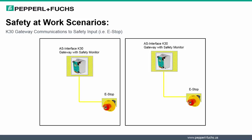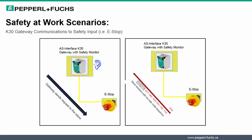Let's proceed to discuss a typical arrangement of a K30 gateway communicating to a safety input. In this scenario, first the gateway sends a request to the safety input or slave. The safety controller, in this case the K30 gateway, listens for a response back from the safety input. The safety input responds with four bits of data, like any other I/O module. But with the safety input, the four bits transmitted from the module to the AS Interface gateway follow specific rules that allow the safety monitor to determine whether the e-stop has been activated.